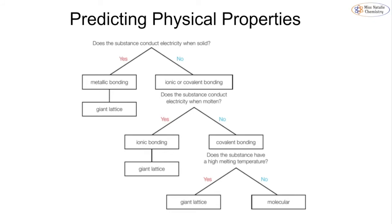If the substance conducts electricity when solid: if yes, it can only be metallic bonding with a giant lattice. If no, it could be ionic or covalent. You then ask: does it conduct when molten? If yes, it's ionic bonding — and of course that can only be a giant lattice. If no, we're left with covalent bonding. To distinguish between giant covalent and molecular covalent: if it has a high melting temperature, it's a giant lattice because you have to break all the covalent bonds. If not, it's molecular because you only have to break weak intermolecular bonds.